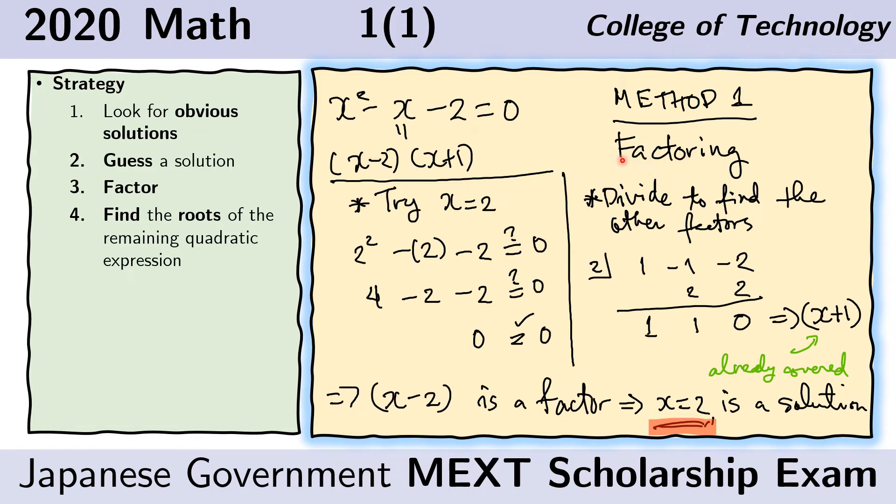Here we first show the factoring method. So we solve this by factoring. For some of you, the factors may be obvious, and those are x minus 2 and x plus 1. For those of you who cannot see these factors immediately, one of the things you can do is try guessing. So guess a solution. In this case, I'm showing a guess of x equals 2. So I try to plug in 2 in the equation. And if it satisfies the equation, then x equals 2 is a solution. And therefore, x minus 2 must be a factor.